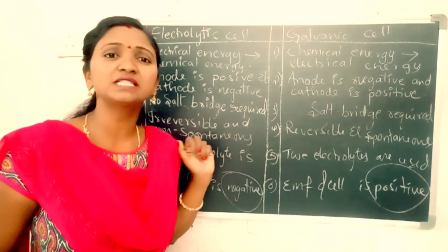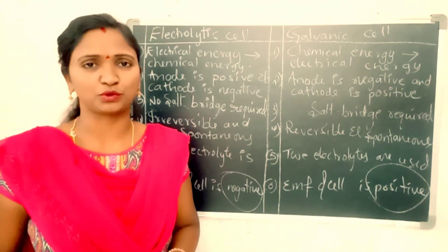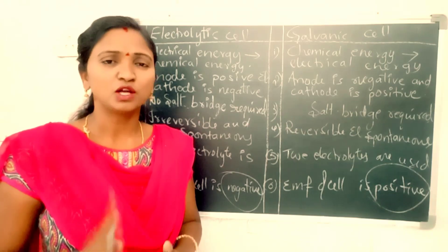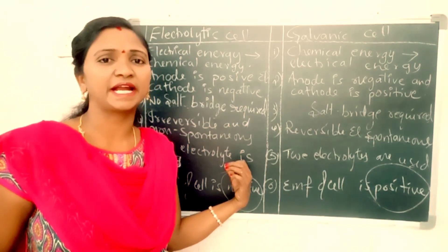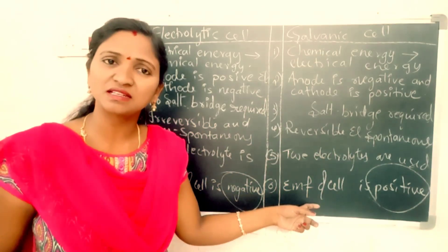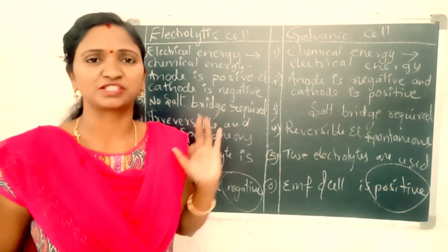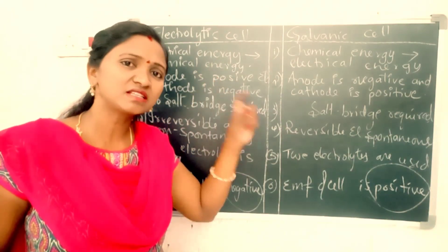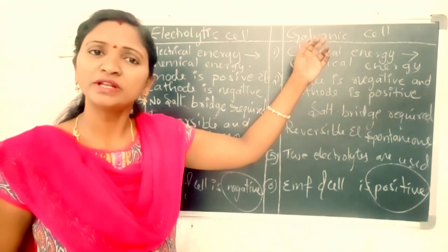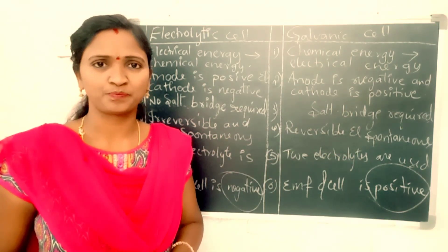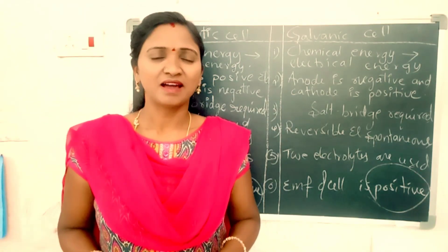Only one electrolytic solution is required in an electrolytic cell, but in galvanic cell two different electrolytic solutions are required. The EMF of an electrolytic cell is always negative, and the EMF of a galvanic cell is always positive — if the EMF of galvanic cell is negative, the cell does not function. Finally, electrolytic cell requires an external source of electricity like a battery, but the galvanic cell itself acts as the electricity source. I hope you understand. Thank you.